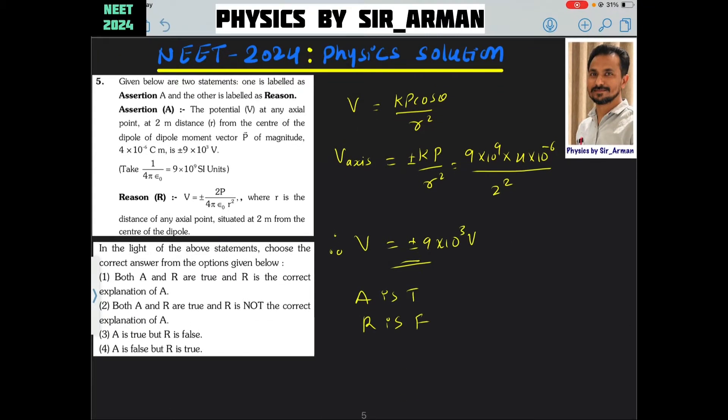Question number 5. Given below two statements, one is labeled assertion and the other is labeled reason.